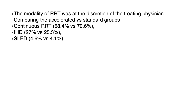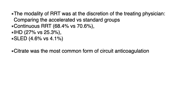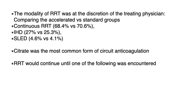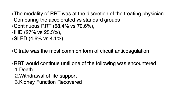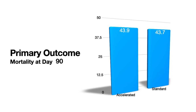Citrate was the most common form of circuit anticoagulation used. Renal replacement therapy was continued until death, withdrawal of life support, or recovery of kidney function. The primary outcome showed no difference: mortality was 43.9% in the accelerated group versus 43.7% in the standard group, which was not statistically significant.